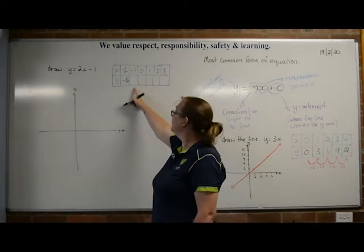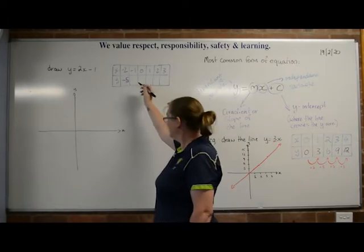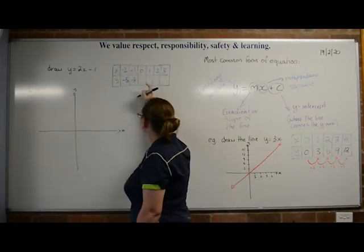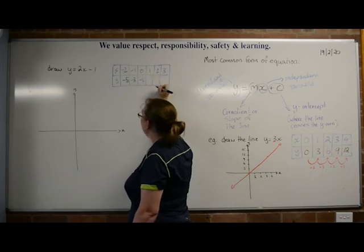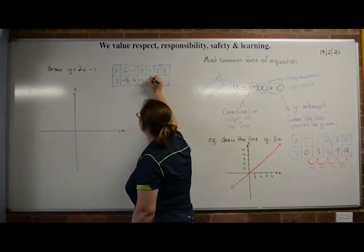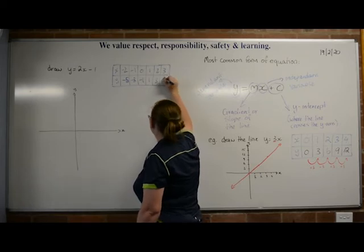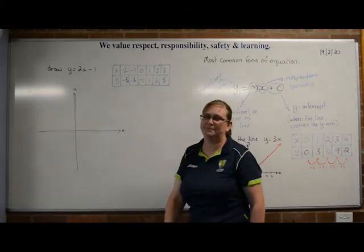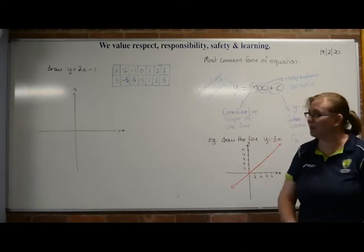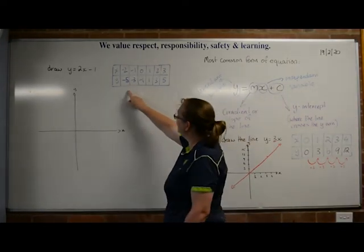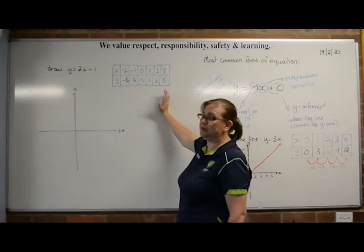So I put in minus 1 for x — that gives negative 3. Put in 0, gives 1. Then x equals 1 gives 1. Then 2 gives 3, and 3 gives 5. Is my pattern working? Yes — I'm going up by 2s, so I know I've done this correctly.